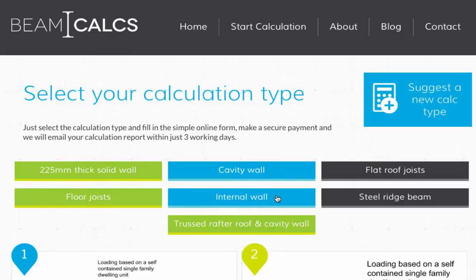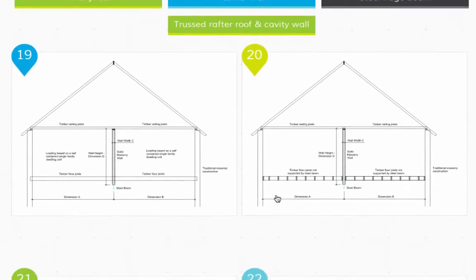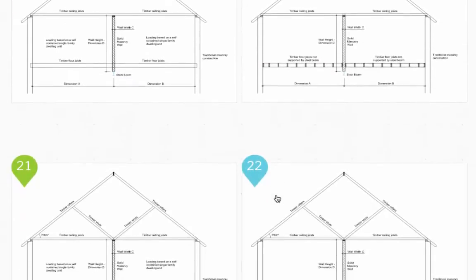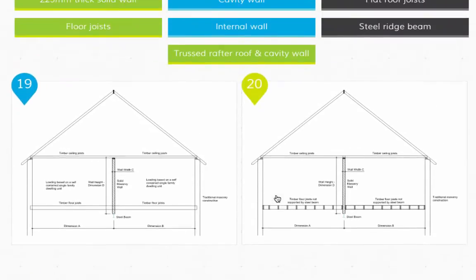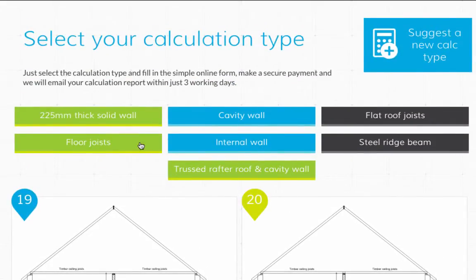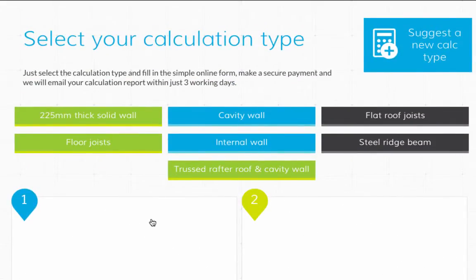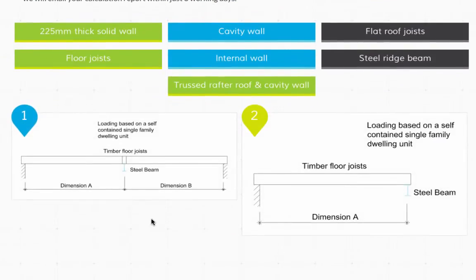For example, if you click on the internal wall button, you will only see scenarios for steel beams that support internal walls — that's six calculation types. Whereas if you click on the floor joists button, only calculation types 1 and 2 appear. You now need to look carefully at each diagram and see which one fits your building project. You can click on each diagram to enlarge it.